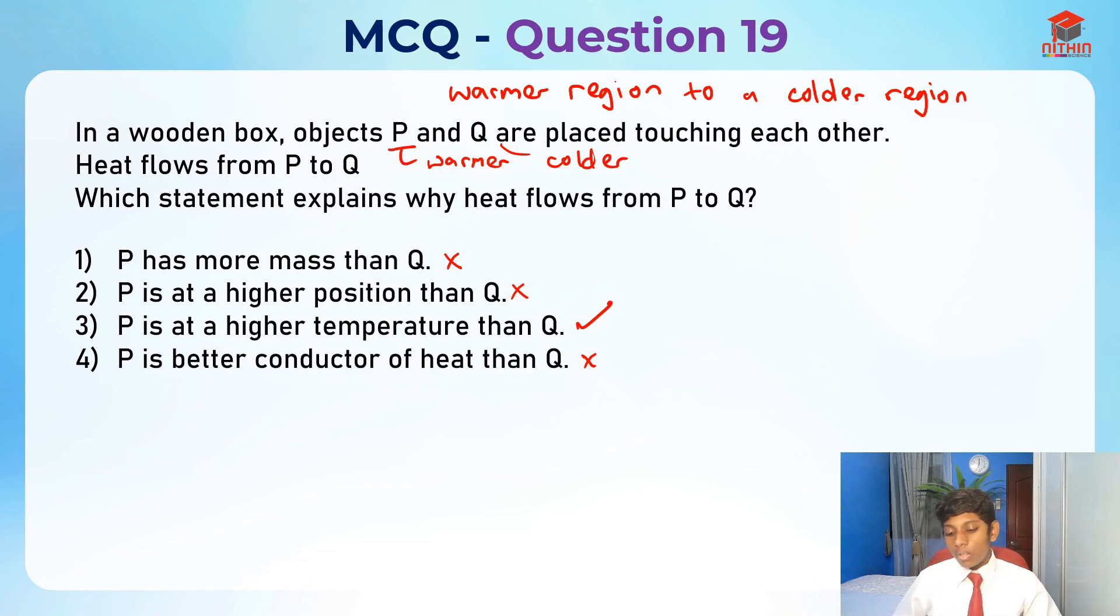The answer for this question is option number three: P is at a higher temperature than Q. That's why heat flows from P to Q, because heat flows from a warmer region to a colder region.